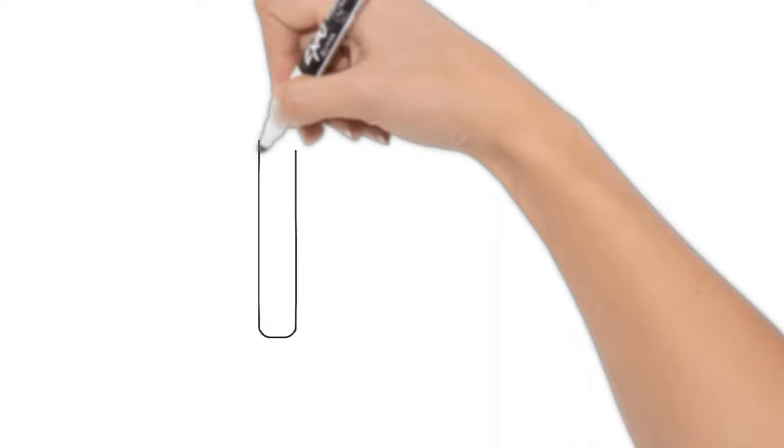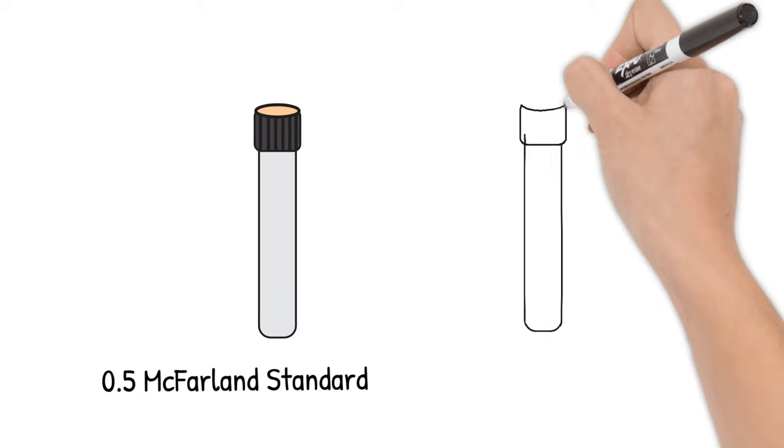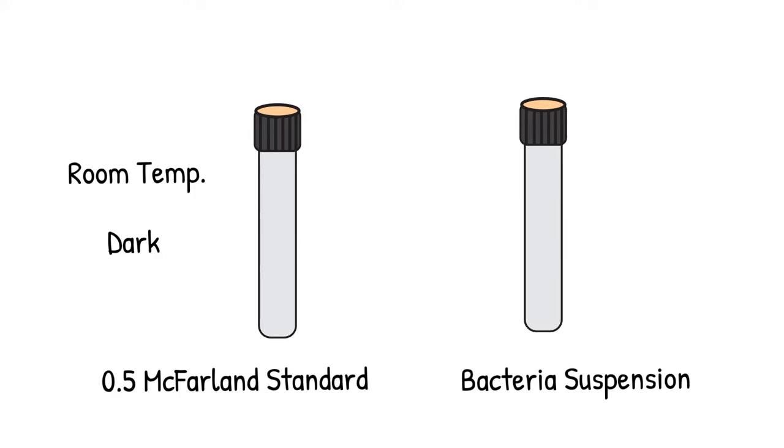Prepare this solution in the same type of tubes as the one you will use to prepare your bacteria suspension. The result will be slightly turbid. Store the mixture at room temperature in a dark area for later use.